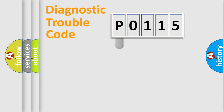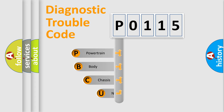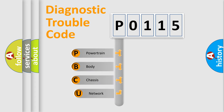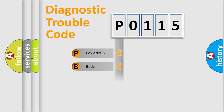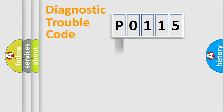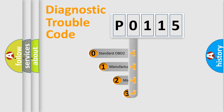Let's look at the history of diagnostic fault code composition according to the OBD2 protocol, which is unified for all automakers since 2000. We divide the electric system of an automobile into four basic units: Powertrain, Body, Chassis, and Network. This distribution is defined in the first character of the code.